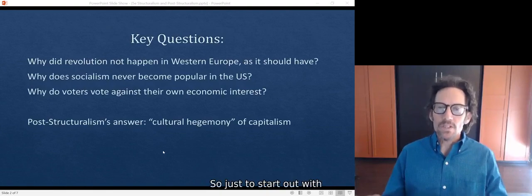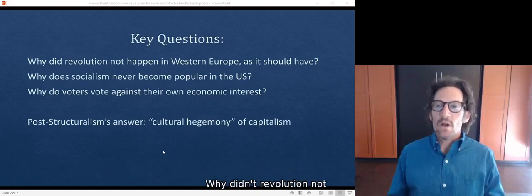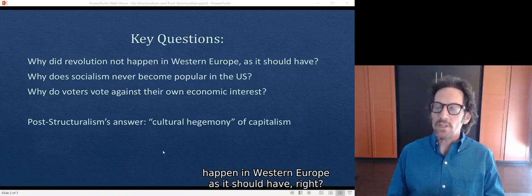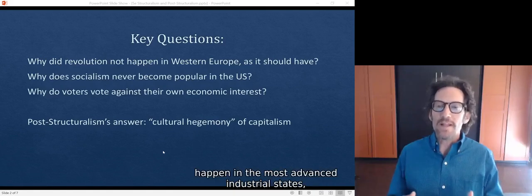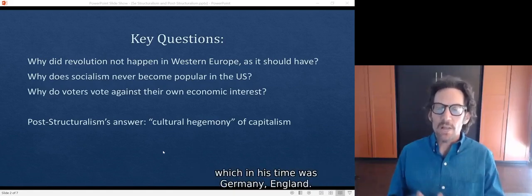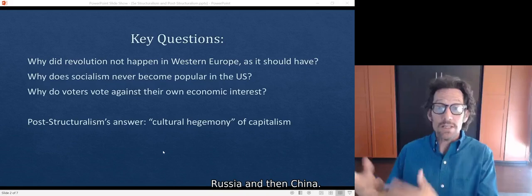So just to start out with some key questions that Marxists have struggled with over the decades. Why did revolution not happen in Western Europe as it should have? Marx said revolution should happen in the most advanced industrial states, which of his time was Germany and England. But in fact the big revolutions happened in peasant societies, Russia and then China.